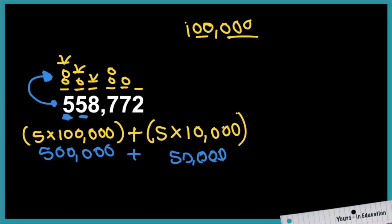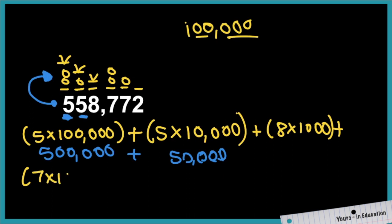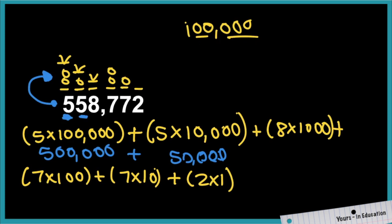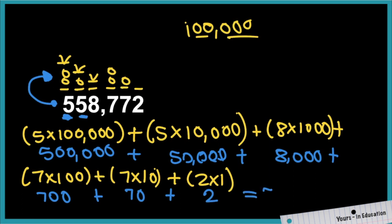Continuing: eight groups of 1,000, plus seven groups of 100, plus seven groups of 10 — again, same digit, different place value — plus two groups of 1. Multiplying: 8 times 1,000 is 8,000, plus 7 times 100 is 700, plus 7 times 10 is 70, plus 2 times 1 is 2. Reading the number: 558,772.